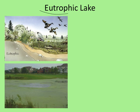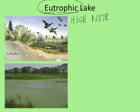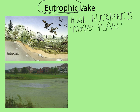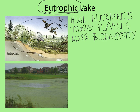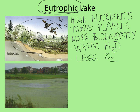Eutrophic — 'eu' means high and 'trophic' means food — so this lake has lots of nutrients. As the lake gets older it picks up more nutrients from the environment. More nutrients means more plants and more algae, giving you more of a base for the food chain, so you have more biodiversity. Look at that picture — it's got a lot more animals and plants than the oligotrophic lake picture. It also means there's warmer water, and warmer water means less dissolved oxygen in the system.